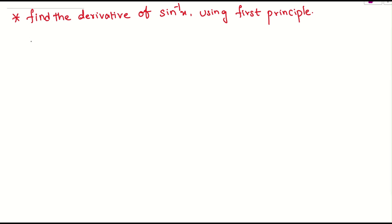Let us see the question: how to solve. What are they asking here? We need to find the derivative of sine inverse of x using the first principle. So now let us see how to prove this. For proving this, let us assume what is the given thing, that is f of x. What is f of x? That would be sine inverse of x.